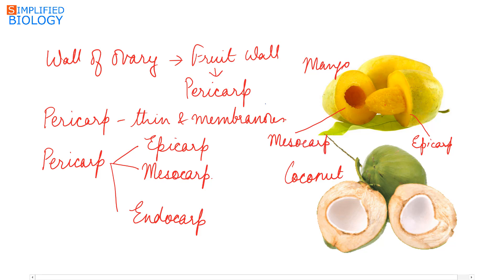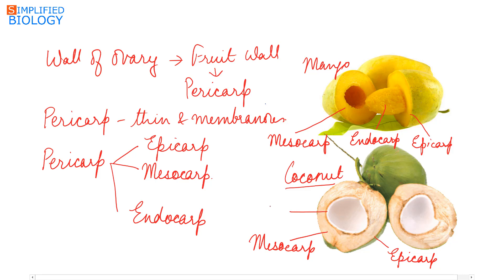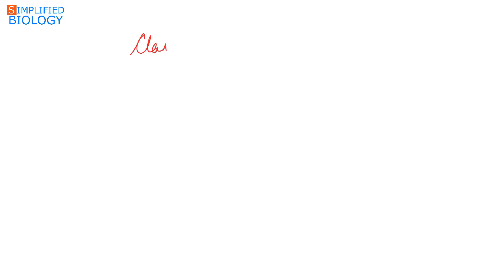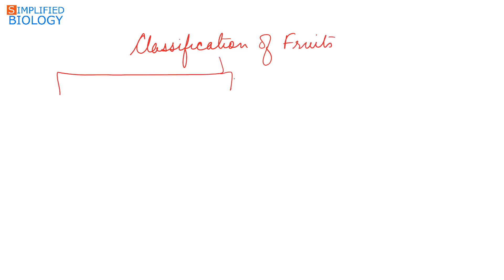In mango, the inner hard and stony layer is the endocarp, inside which lies the seed. In coconut, the outer green layer is the epicarp, the middle thick mesocarp is fibrous, and the hard stony endocarp encloses the endosperm.